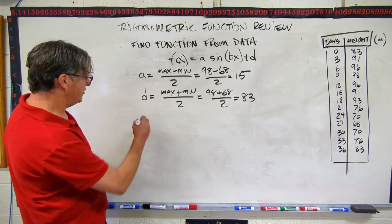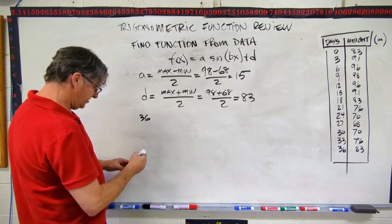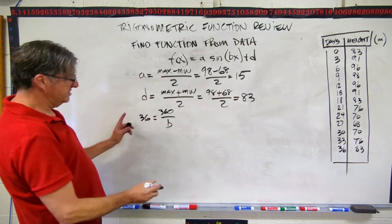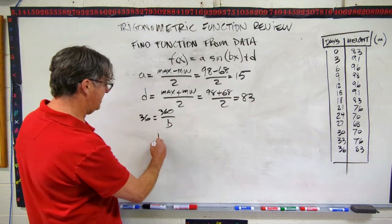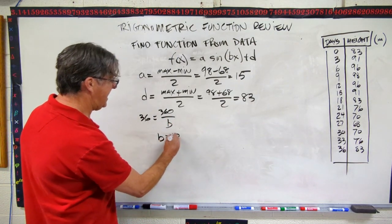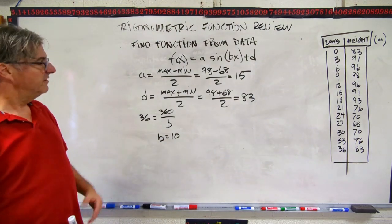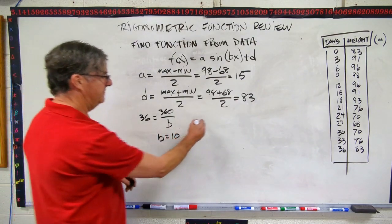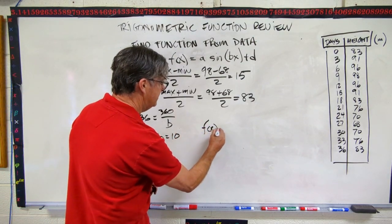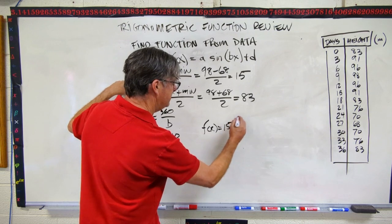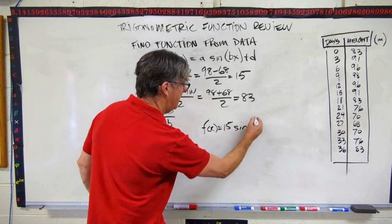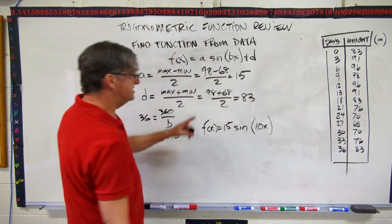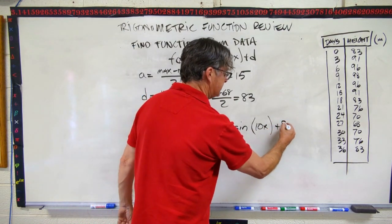So we know that the period is 36. So 36 equals 360 over B. And so we just swap and divide. And we're going to get B is going to be 10. Okay. So now we've found our A, our D, and our B. We can write our function. F of x equals, what's our A? 15 times the sine of Bx. B is 10x. And our D is 83. So plus 83.